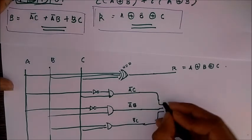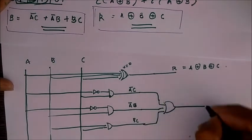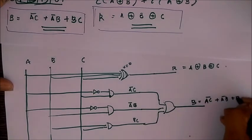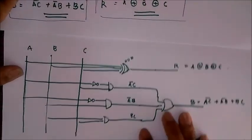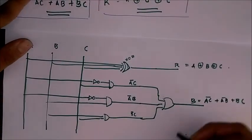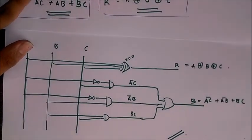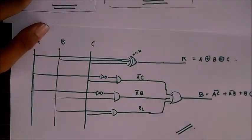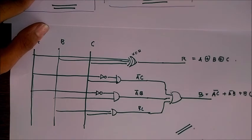This is our borrow: A bar C plus A bar B plus B C. Okay, so this is our final circuit of a full subtractor. So this is all in the full subtractor.